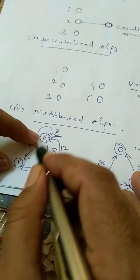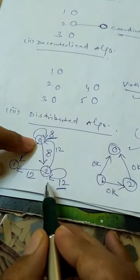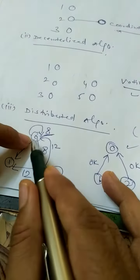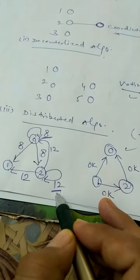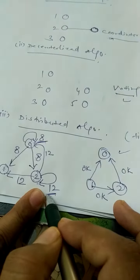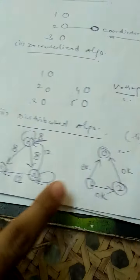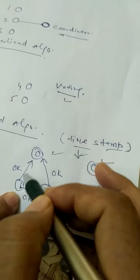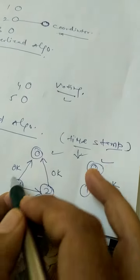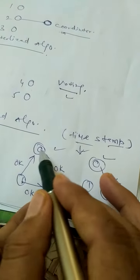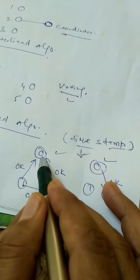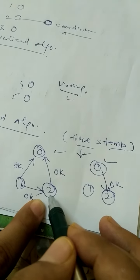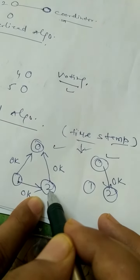Process 0 and process 2 are both participating in the coordination process, with timestamps 8 and 12 respectively. Process 1 is not participating. Since timestamp 8 is lesser, process 0 is selected as the coordinator. Process 2, having the higher timestamp of 12, agrees that process 0's timestamp is lesser.